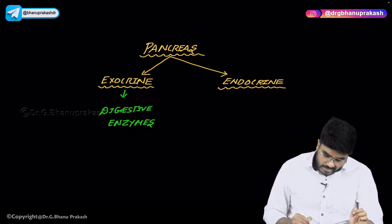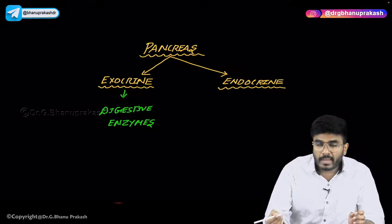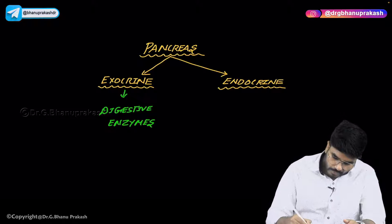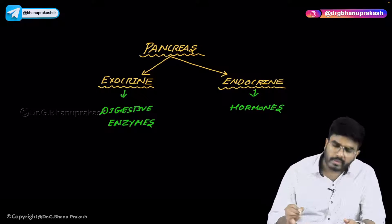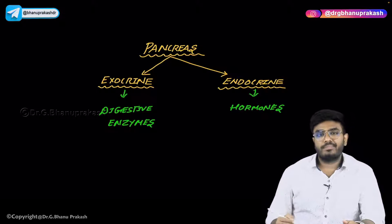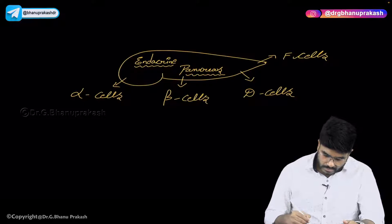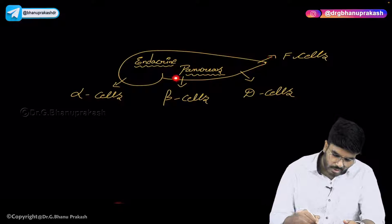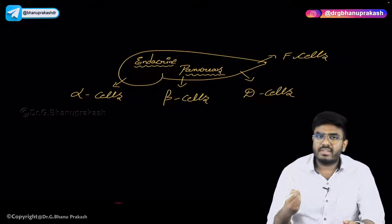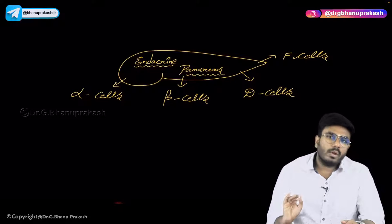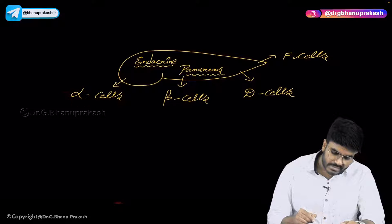Now let's discuss the hormonal and endocrine functions of the pancreas. Endocrine function means involuntary production of hormones. Now, in the endocrine pancreas there are four important types of cells: alpha cells, beta cells, D cells, and F cells.